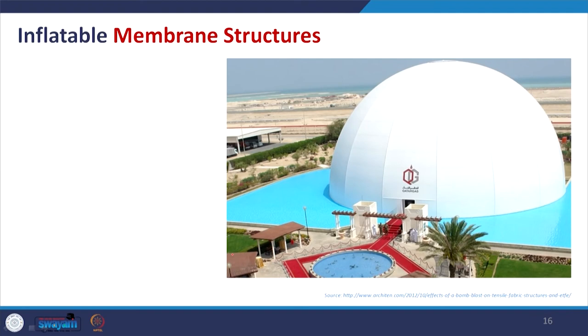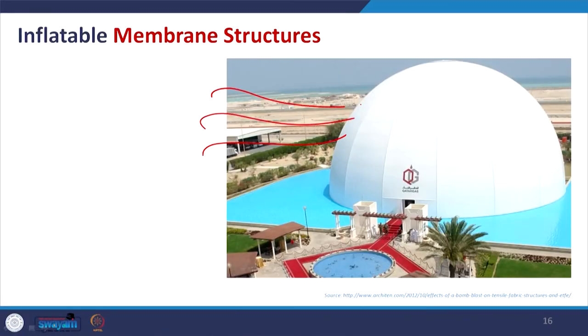Coming to the inflatable category: the structure is made with the help of air to give the form. An initial form is made and air is injected to maintain the shape. This is very useful for temporary structures — when the purpose is solved, you simply remove the air, fold it, and transport it easily. A disadvantage is that heavy wind may deform its initial shape, and interior lighting fittings need careful consideration.